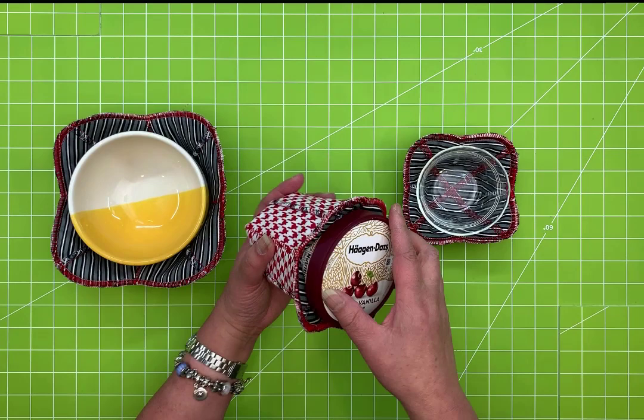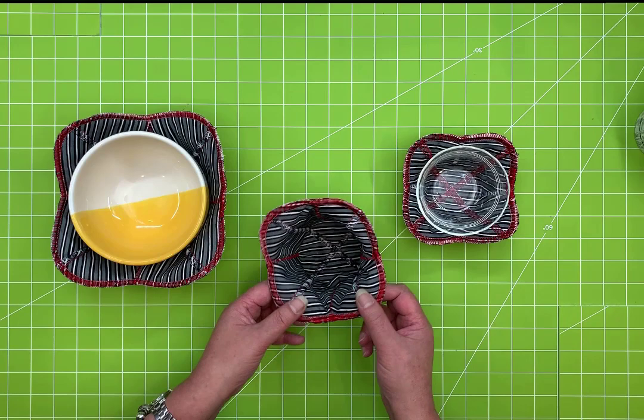Bowl cozies are usually done with the traditional just regular straight stitch sewing machine, but I thought there had to be an easier way to do that with the serger. So I've updated the construction method.